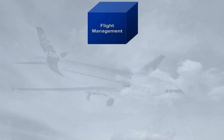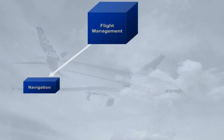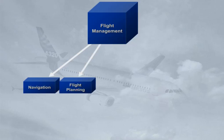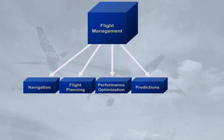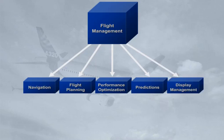The flight management part of the FMGS controls the following functions. Navigation: the position of the aircraft and the estimated accuracy of this position. Flight planning: the flight plan computation. Performance optimization: costs, speeds, and altitude optimization. Predictions: accurate estimates for waypoints, altitudes, speeds, fuel, destinations, and alternates. Display management: the control of information to the EFIS system to display autoflight modes and navigation information.